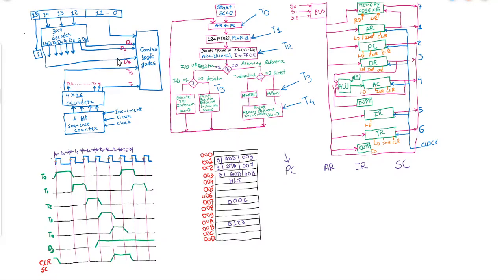Whenever we start the execution of any program, let us assume this is our process program which is stored on the hard disk. But whenever you bring that program into RAM, it will be converted into instructions. Let us say this is process P1. A process will have a set of instructions and a set of data, meaning the program will be divided into two parts: the instruction part and the data part.